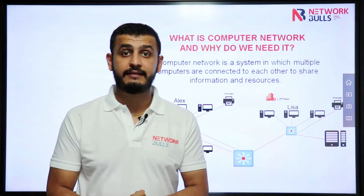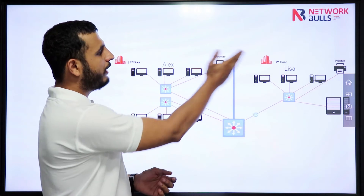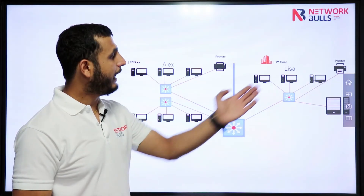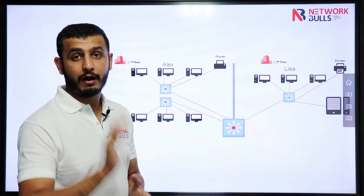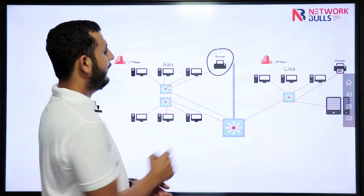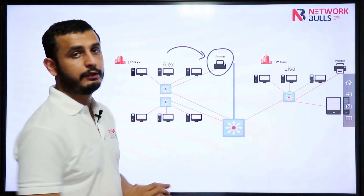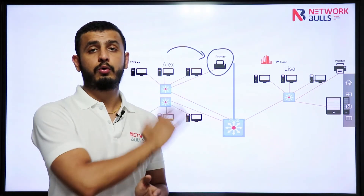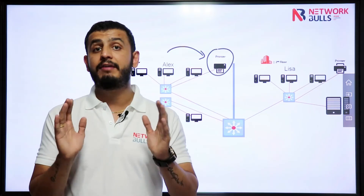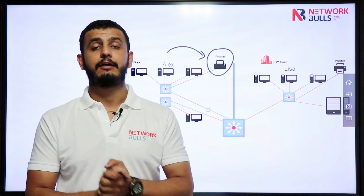How can we use the network in this case? LX will call Lisa and ask her to give a print command for the file located at Lisa's computer, for the printer located at the first floor. So LX can directly collect the file from the printer — no need for LX to go to the second floor. In this example we have seen how we used the network for the purpose of sharing a file.